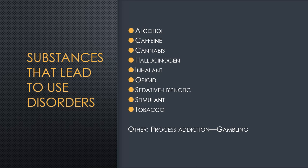Substances that can lead to use disorders fall into four major groupings: impaired control, social impairment, risky use, and physical effects. The substances we're going to look at are alcohol, caffeine, cannabis, hallucinogens, inhalants, opioids, sedative-hypnotics, stimulants, and tobacco. We don't want to forget that gambling is also a very addictive process and can also lead to a disorder.